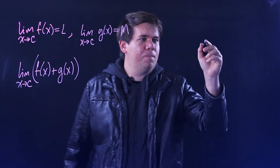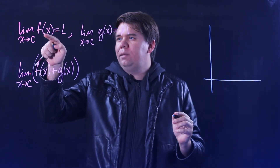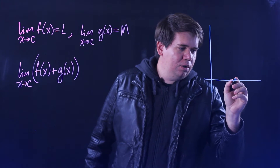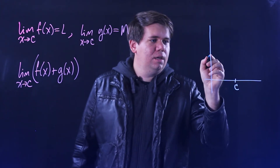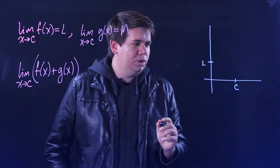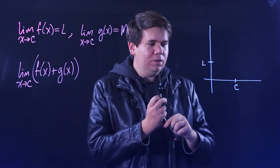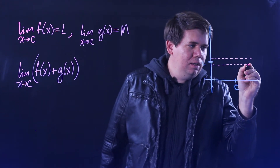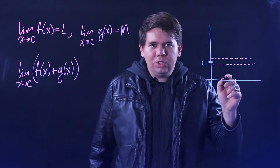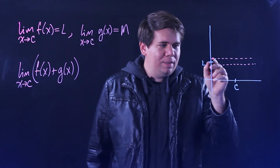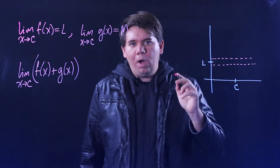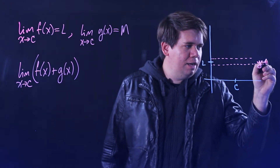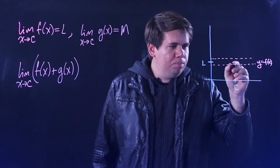To make sense of this, let's unpack these definitions again. If we have some function f of X and we know its limit as X approaches C is L, that means as you're getting closer and closer to C, the Y value of the function will be approaching L. In particular, you can get as close to L as you want — within any degree of closeness — if you're sufficiently close to C. So maybe this is like 0.1: you'll be within 0.1 of L if you're sufficiently close to C.